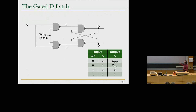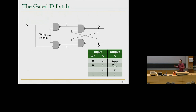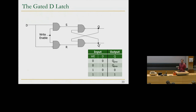Q takes the value of D when write enable is set to one — if write enable is one, the output becomes D-bar-bar which is D again. If write enable is zero, Q doesn't change — it holds its previous value. Write enable is intuitive: set it to one to write, set it to zero to retain. This is our single-bit gated D latch, and it works correctly under all conditions.